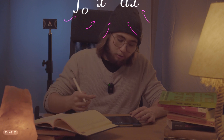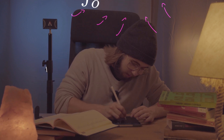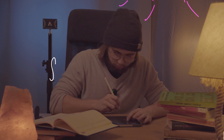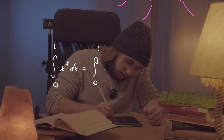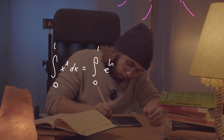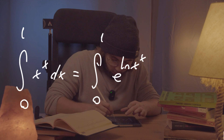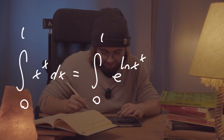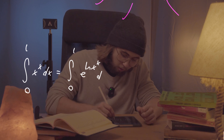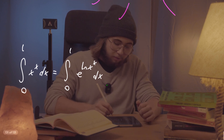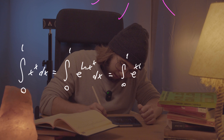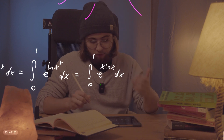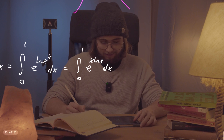What I'd like to do is first rewrite this integral — from 0 to 1 of x to the power of x dx — and rewrite the integrand as e to the power of the natural log of x to the power of x. So e to the power of x times natural log of x, by the laws governing logarithms.